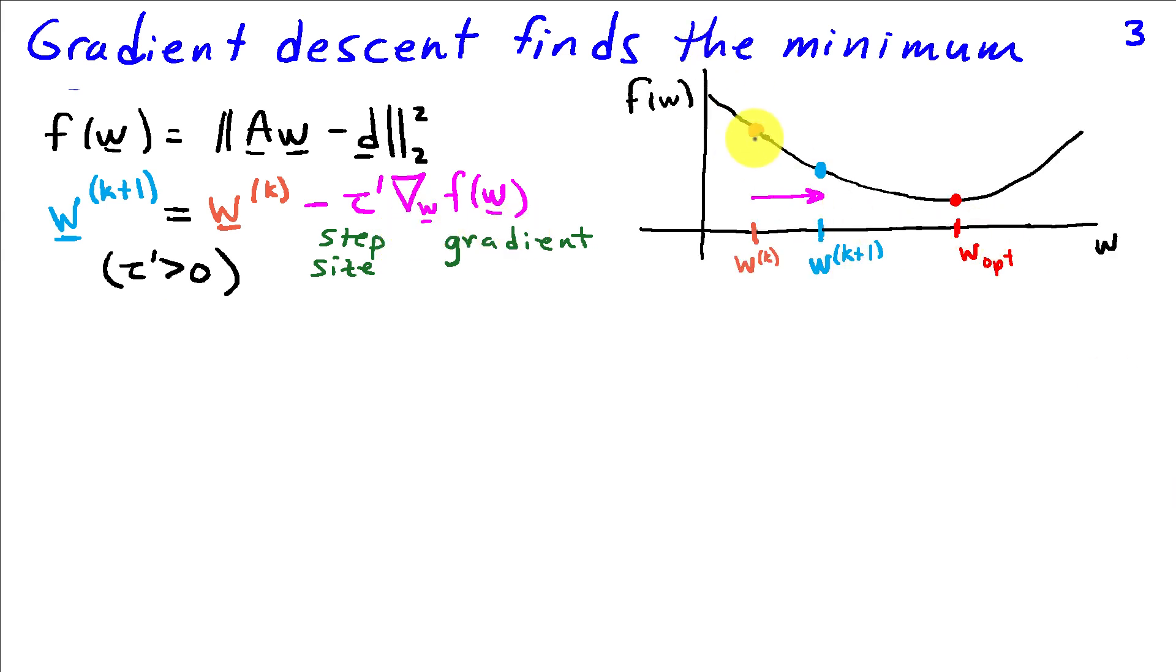So basically what this means is that if we start at some point w sub k, what we're going to do is try to find a new iterate wk plus 1 that has a lower value of the cost function. So we'll evaluate the gradient at wk and use the gradient to find wk plus 1 by stepping in the negative gradient direction as indicated by the pink arrow here. And if we keep stepping downhill, eventually we should end up at the optimum w opt.